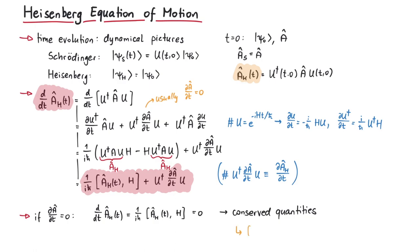For example, since the Hamiltonian obviously commutes with itself, one example of a conserved quantity is the energy of the system. And that's pretty much it for this video. Thank you.